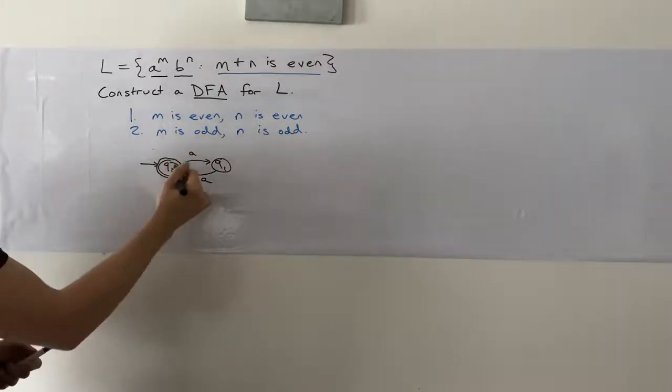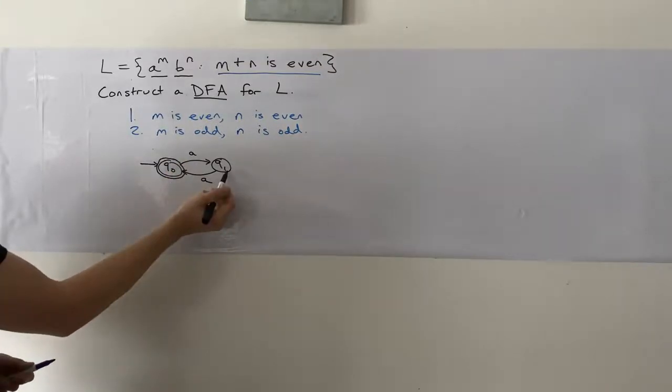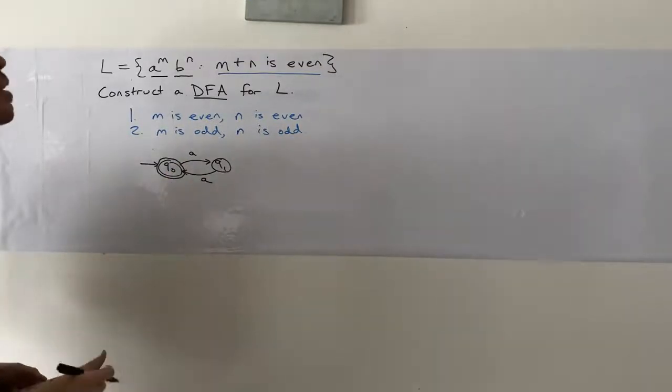Because if we have an even number of A's, we'll end up back at Q0. If we have an odd number of A's, we'll end up at Q1. And this will actually be really helpful for us.